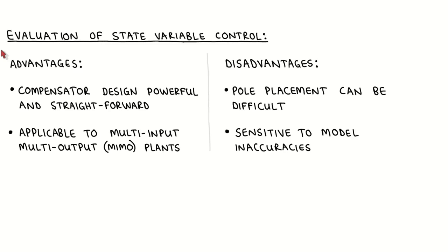Let's now look back on state variable control and briefly discuss its advantages and disadvantages. On the upside, if the plant is controllable and observable, if the plant model is accurate, and if actuator saturation is not a problem, then we can place the closed-loop and observer poles anywhere. If the desired pole locations are given, then it is a straightforward process to design the compensator, and it could therefore be very easy to design an acceptable compensator. It is also quite easy to extend the state variable techniques to plants with multiple inputs and multiple outputs, which are found in many real-world plants.